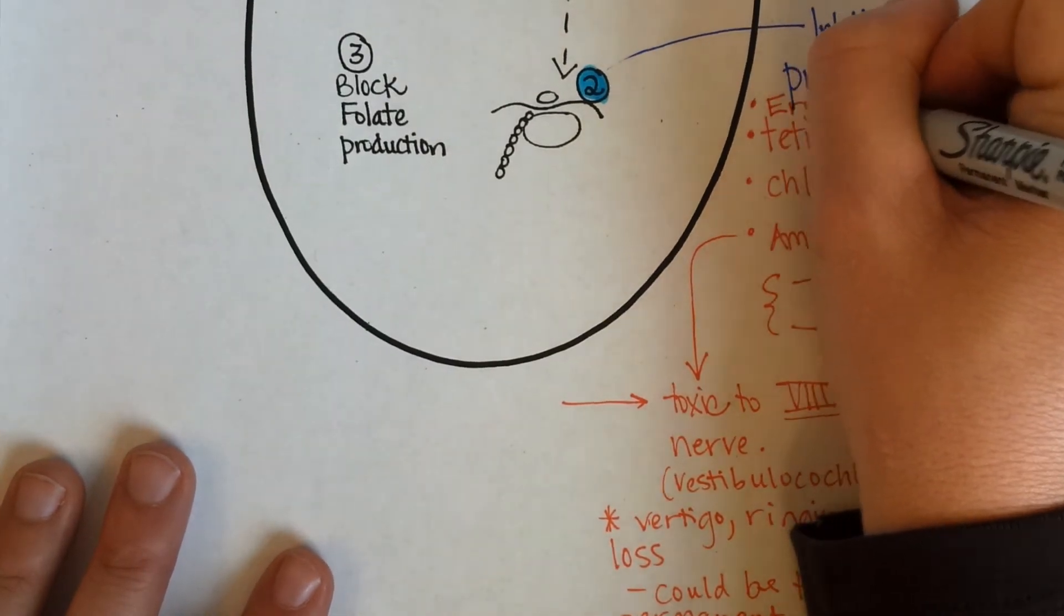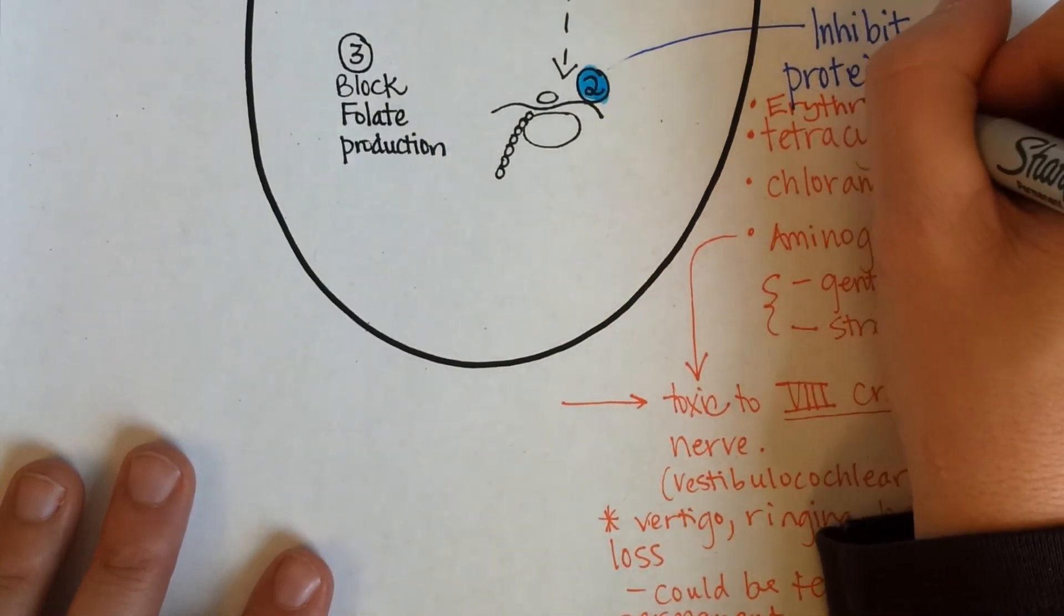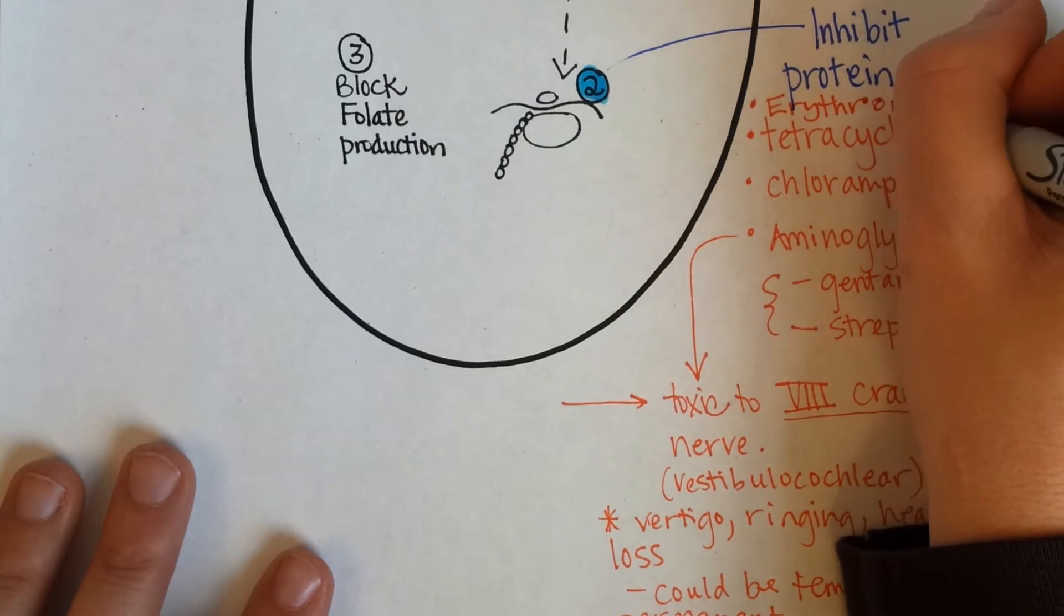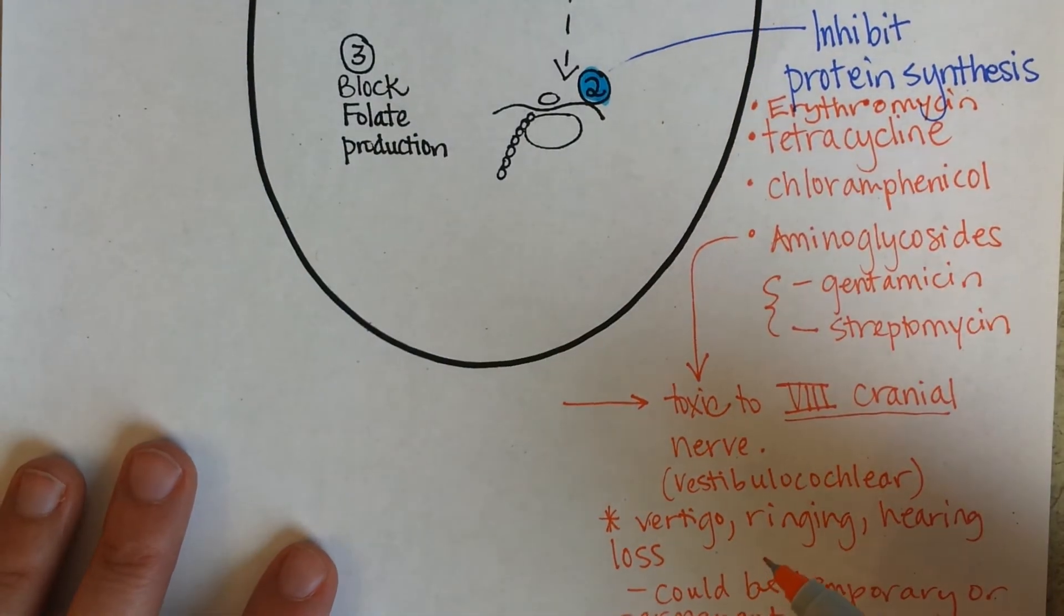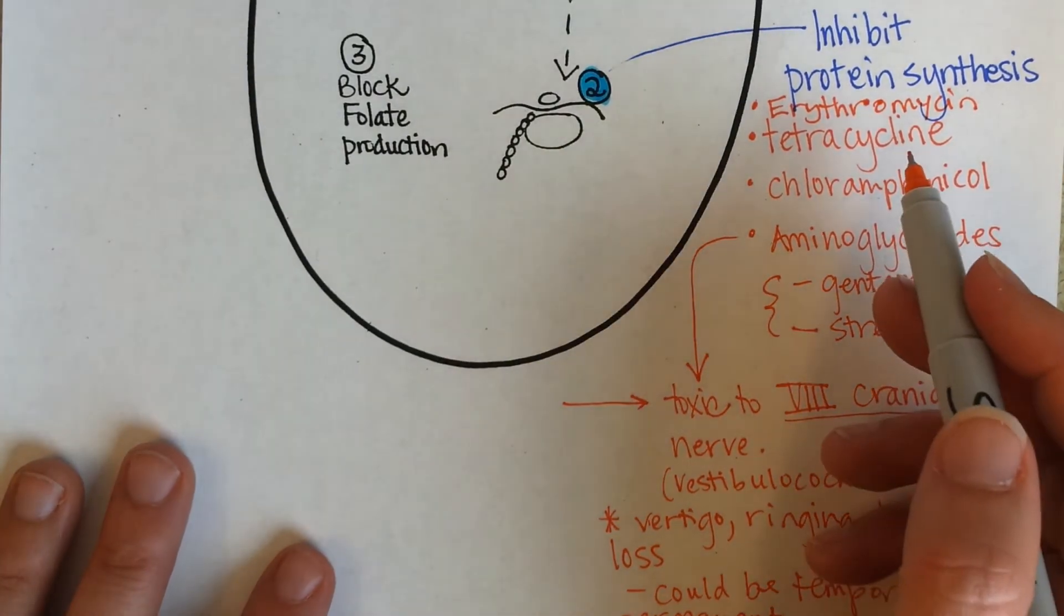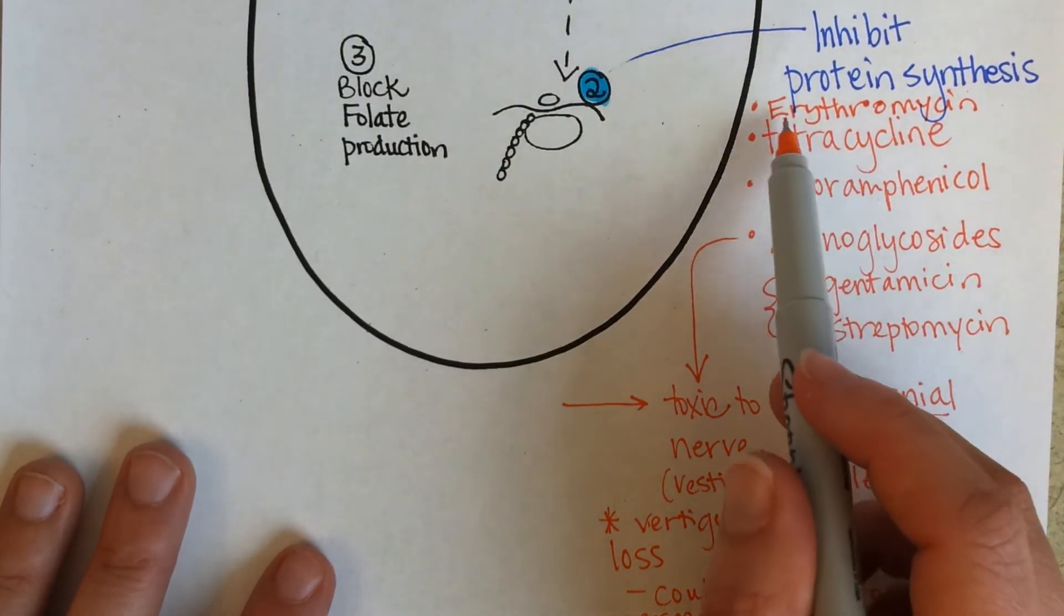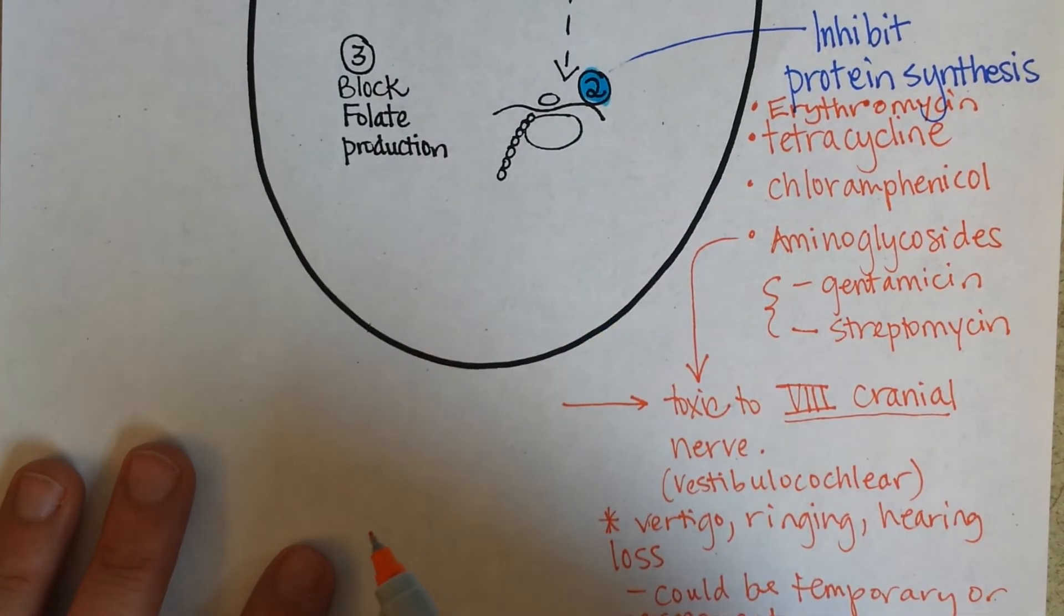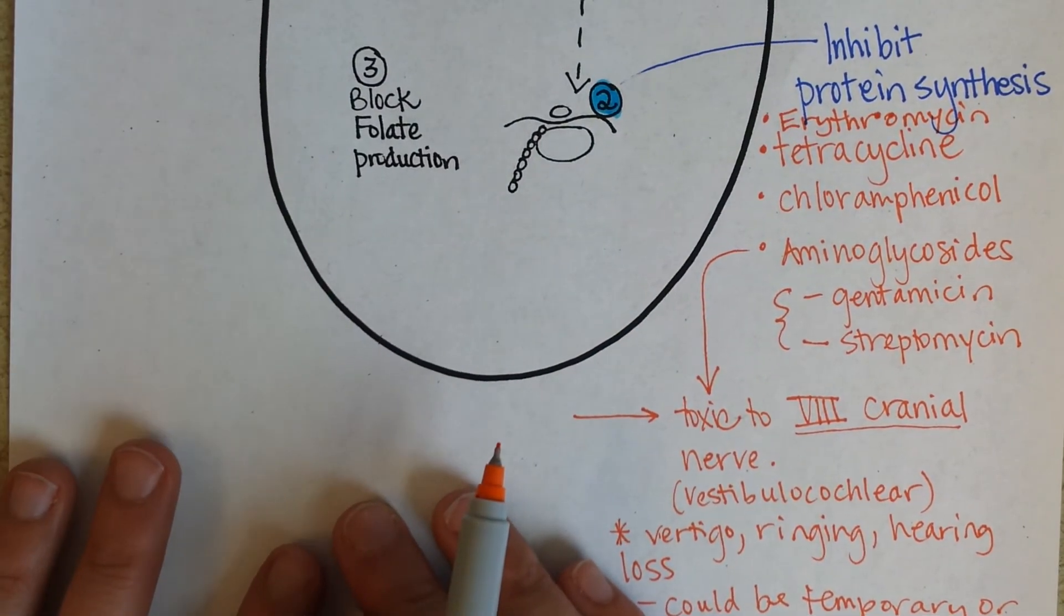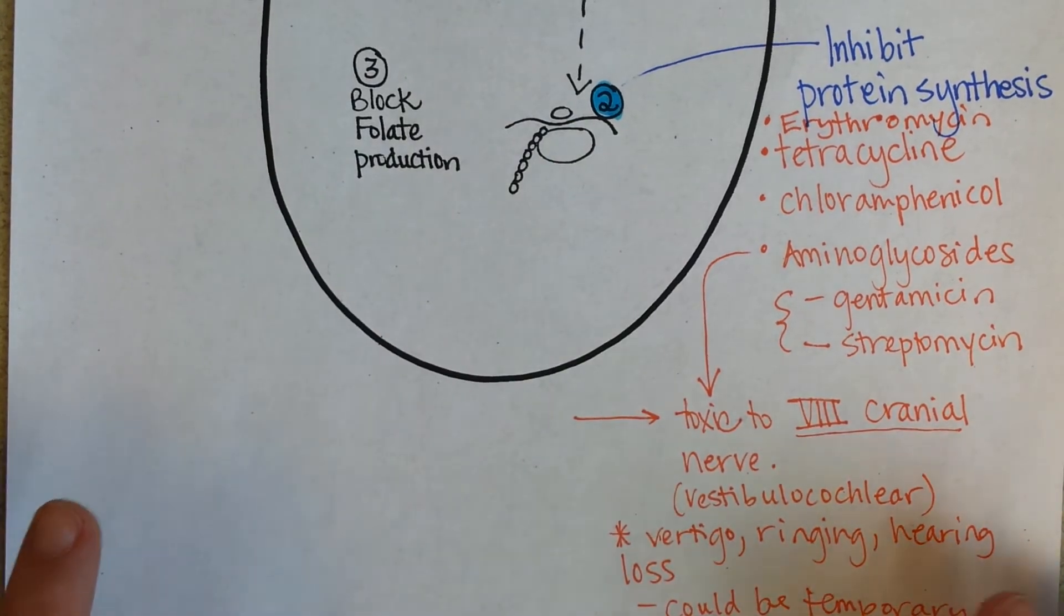Okay, and then I believe—I might have to come back and edit this in the future—but erythromycin is another antibiotic that works by inhibiting protein synthesis. If someone is allergic to amoxicillin, then this is often the antibiotic that they'll prescribe instead.